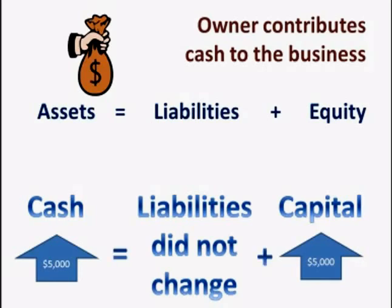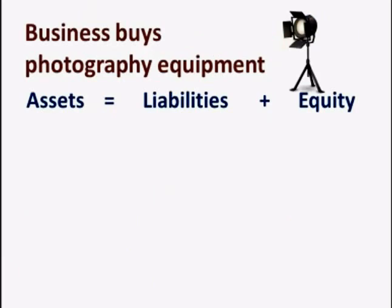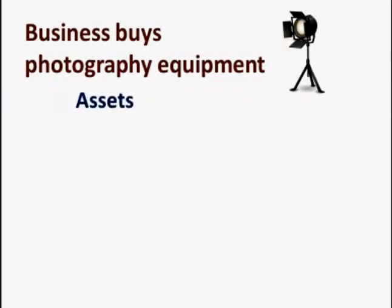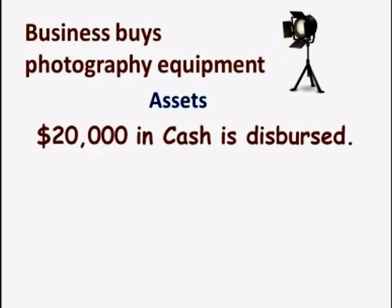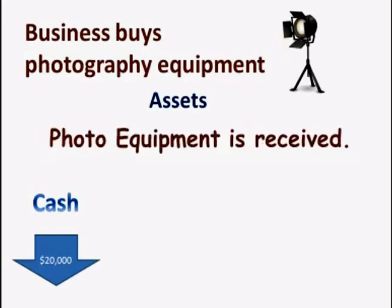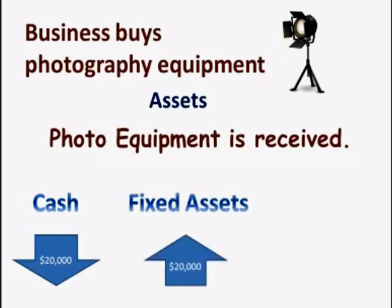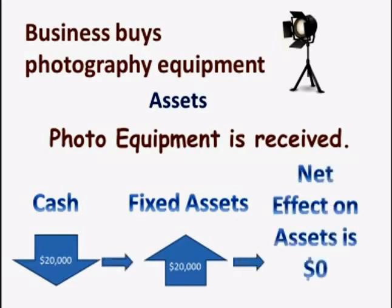Let's take one last example of a photographer who purchases $20,000 of photography equipment using cash. Let's analyze the assets first. Assets decrease by $20,000 because cash was spent. Assets also increase by $20,000 because the business owns an additional $20,000 of equipment, which is a fixed asset. The net effect on assets is zero.